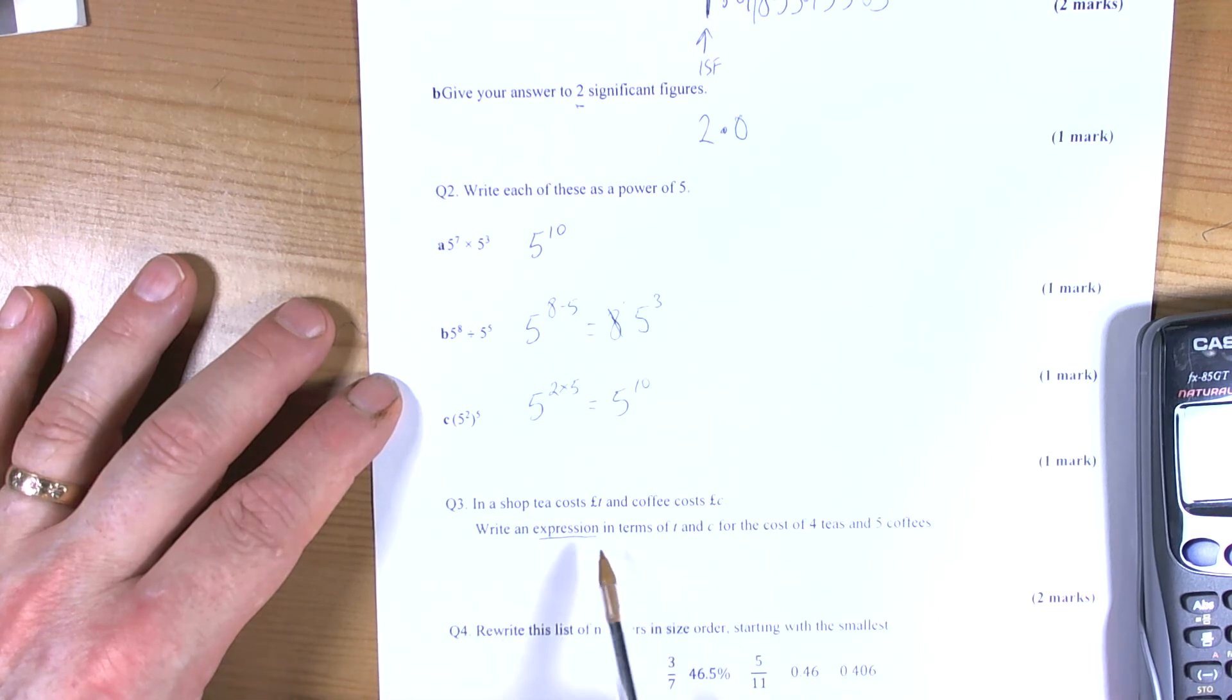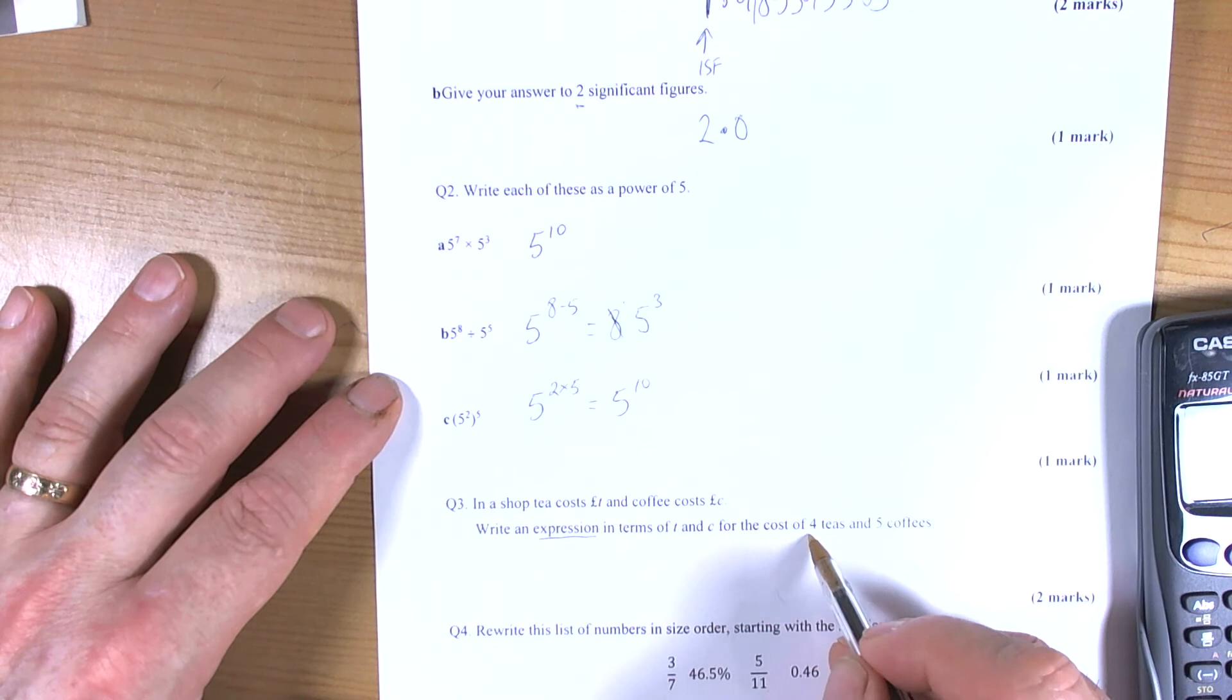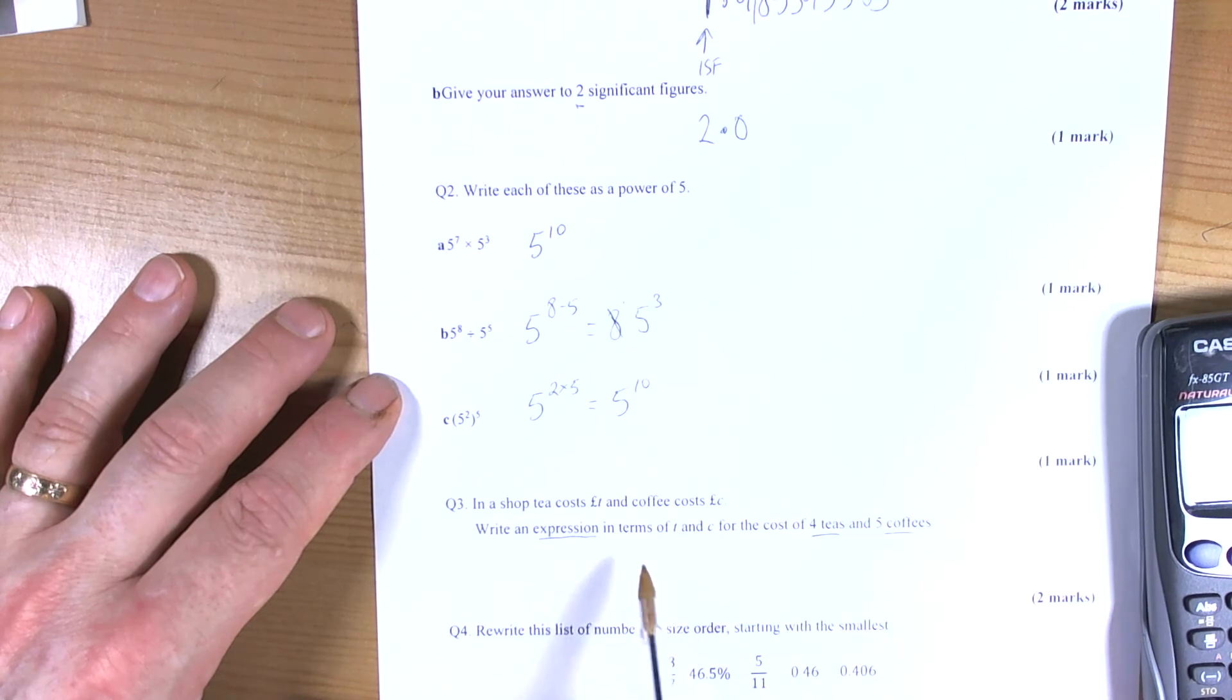So it wants us to write it out for the cost of 4 teas and 5 coffees. Well let's say that tea costs t pounds. If it was 2 pounds we'd be doing 4 times 2, but it's t pounds so we're going to do 4 times t.